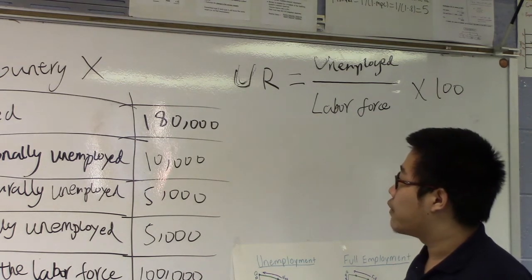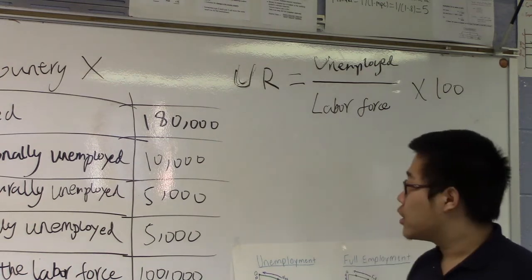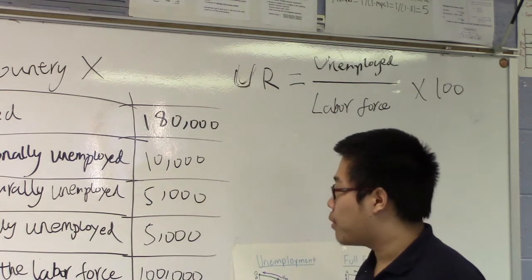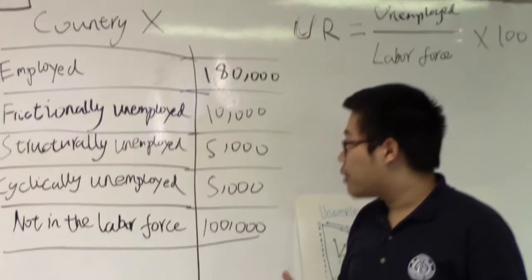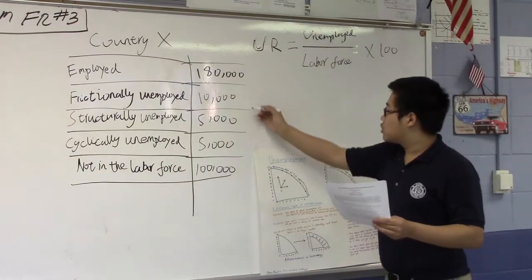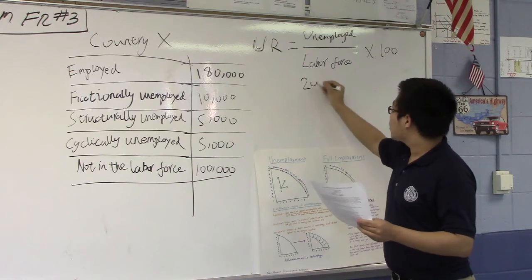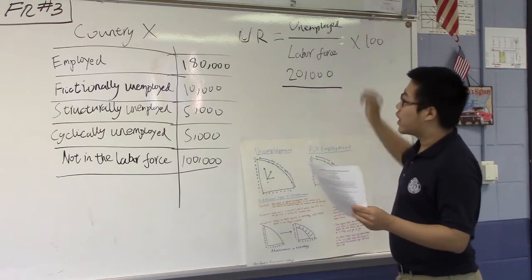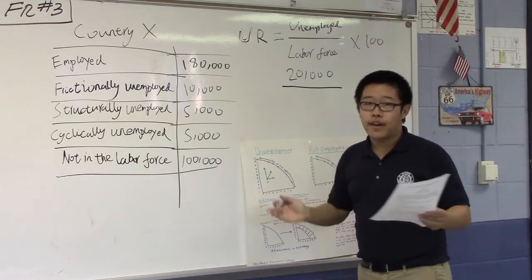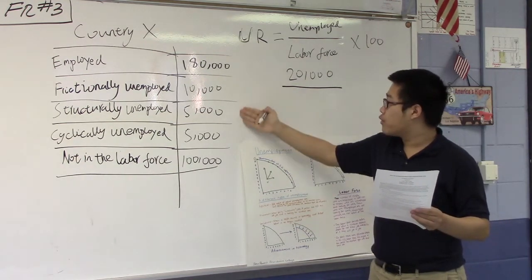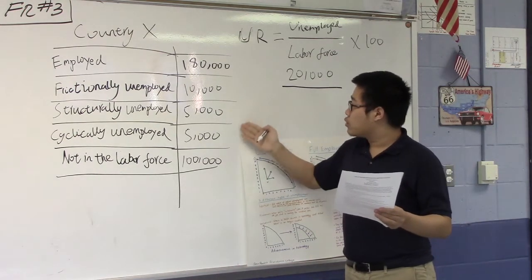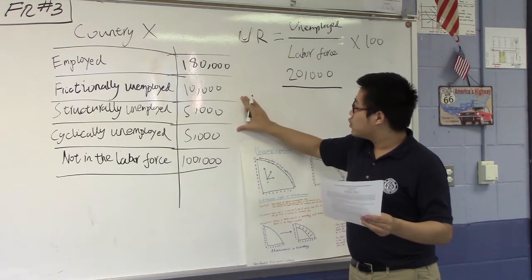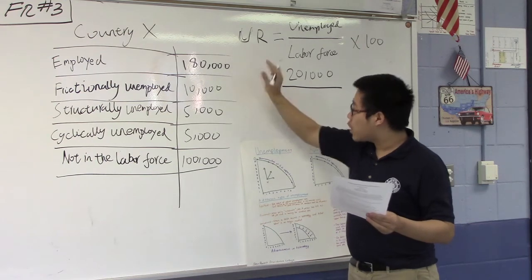In country X, we have 10,000 frictionally unemployed population, 5,000 for structurally unemployed population, and cyclically unemployed population is also 5,000. So these three put together is 20,000. This is the unemployed population in the whole country X. And by labor force, what we define is the unemployed and those who are looking for a job, or sometimes unemployed but still have the will to work. We need to put the unemployed population and the employed population together: 20,000 plus 180,000 is 200,000.